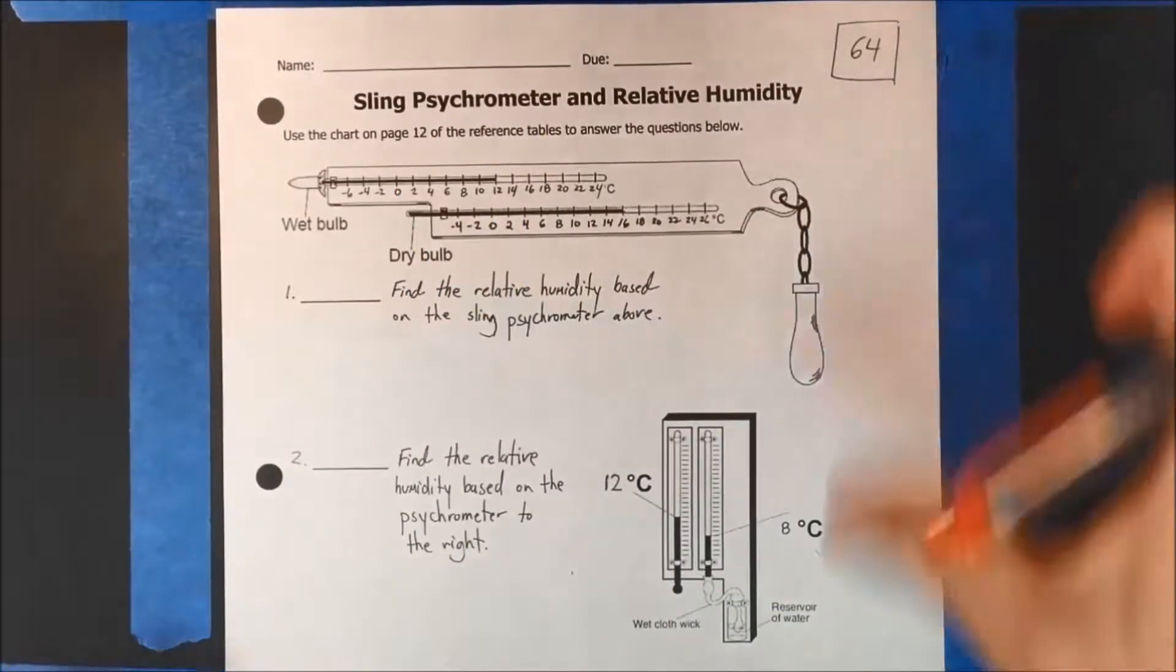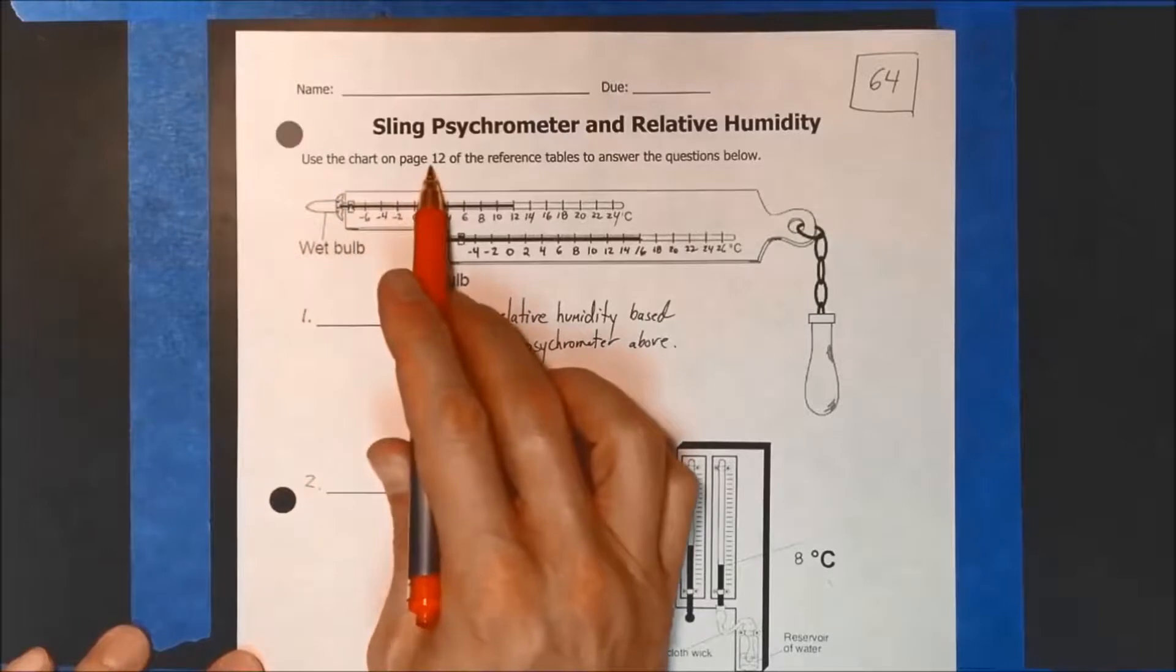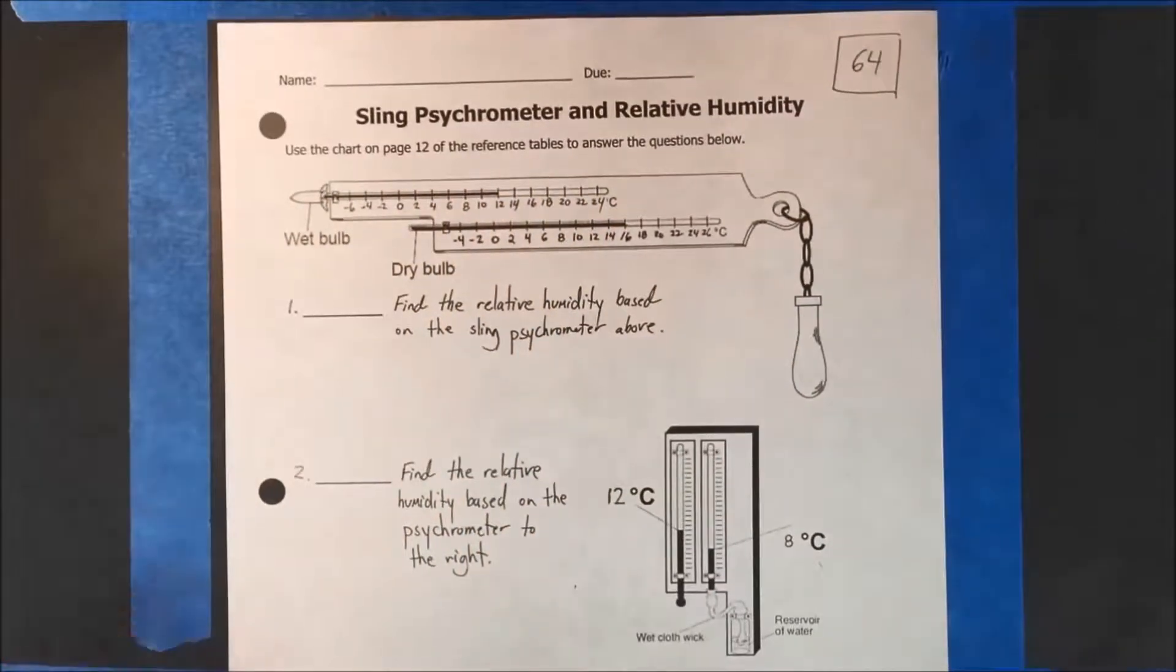Welcome Mr. Gazda here. Homework 64. Relative humidity, sling psychrometer. Here we go. You're going to need a reference table. Use the chart on page 12 of the reference tables to answer the questions below.